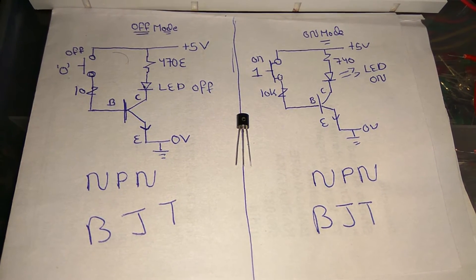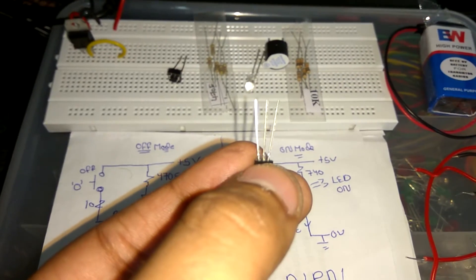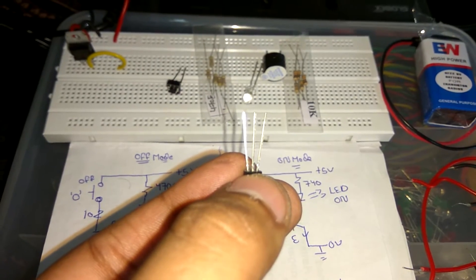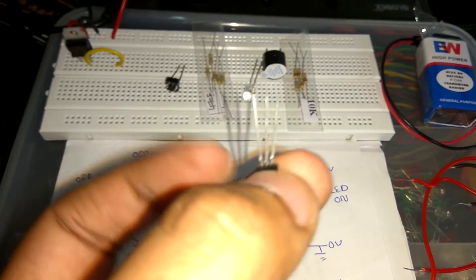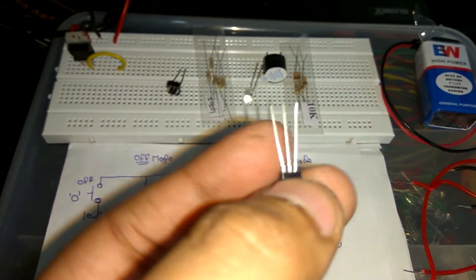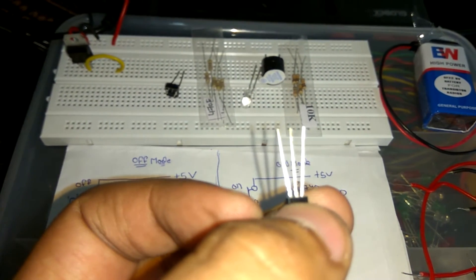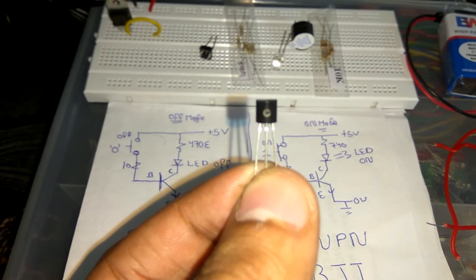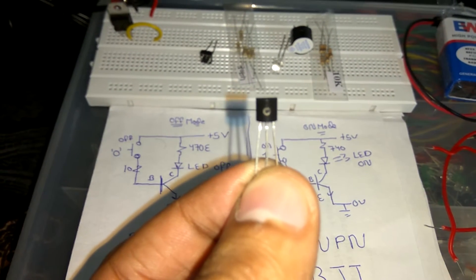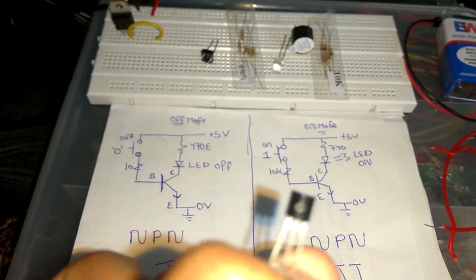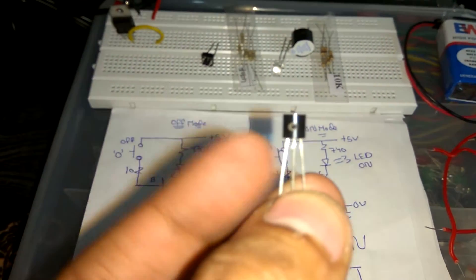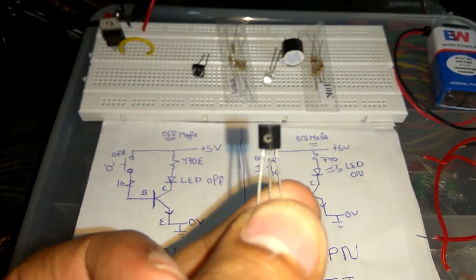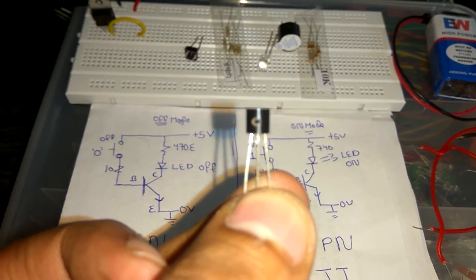I also told you how to identify which leg is which, but I'll explain again. If you hold the transistor with the flat head at the bottom and legs at the top, count from the left: the first one is collector, the middle is base, and the last one is emitter.